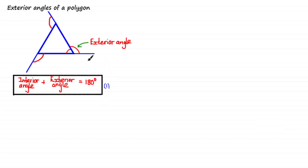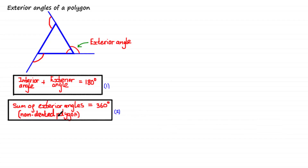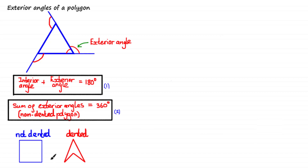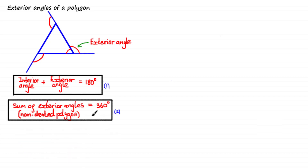There's another interesting property about exterior angles: the sum of exterior angles of a polygon is equal to 360 degrees. Now this is only true for polygons that are not dented — there's a special word for that called convex. Here's an example of a four-sided polygon which is not dented versus one which is dented, so this formula only applies to convex polygons. This formula works for a non-dented polygon with any number of sides.